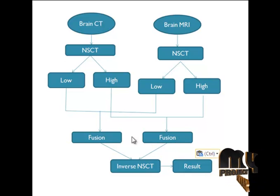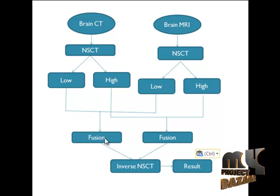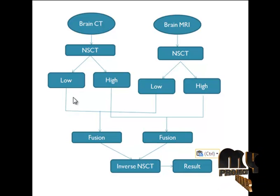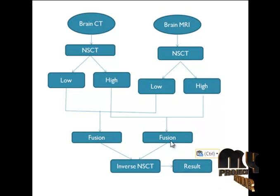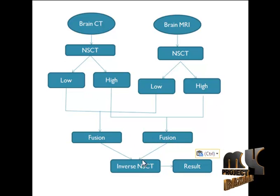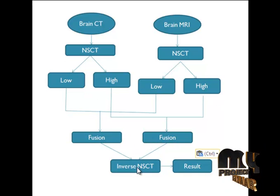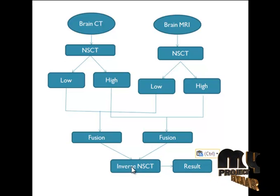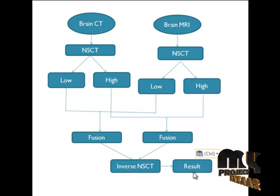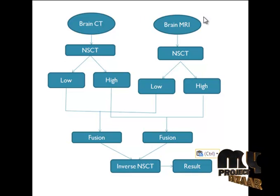After fusing the information, we obtain two outputs: one is the fused low frequency information and the other is the fused high frequency information. These two outputs are passed to the inverse NSCT domain to reconstruct the image. Finally, we get the result, which is the fused information of brain CT and brain MRI images.